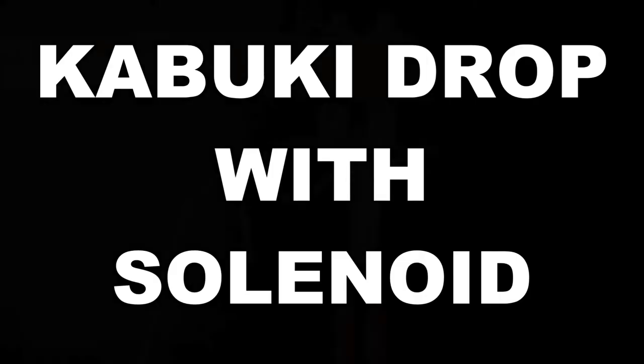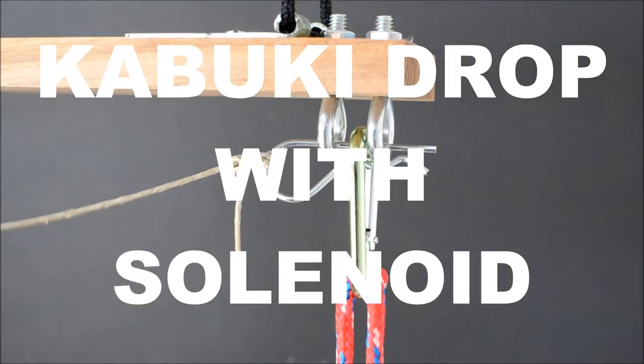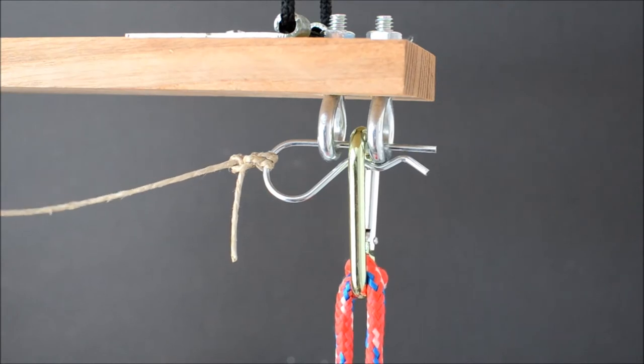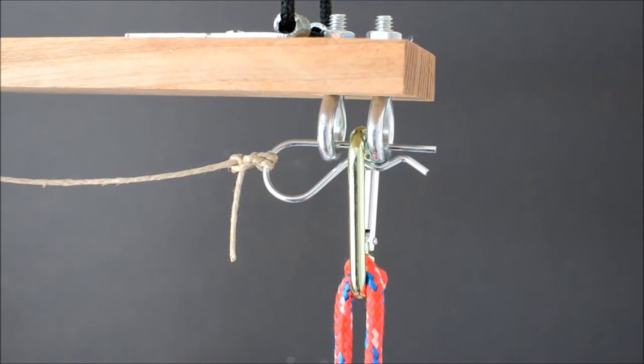One of the most iconic gravity tricks in theater is the kabuki drop. Though the scenery department handles large-scale kabuki drops, a mechanism is useful for props people in designing similar, smaller-scale effects.